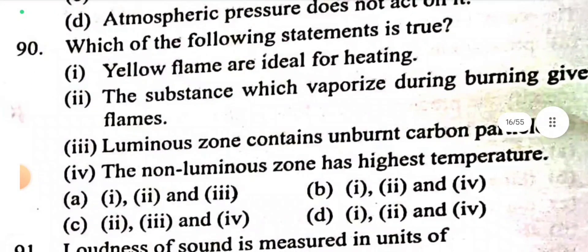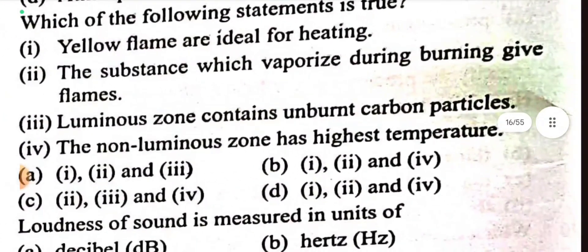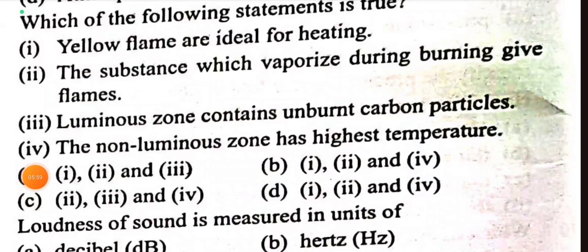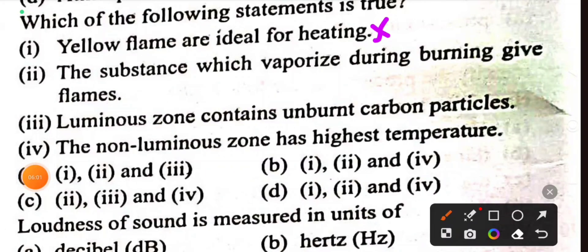Question 90: Which of the following statements is true? Yellow flames are ideal for heating. No, blue flames are ideal. Substance which vaporizes during burning gives flames. Yes. Luminous zone contains unburnt carbon particles. Yes. The non-luminous zone has the highest temperature. Yes. So the true ones are 2, 3, 4. Option C.